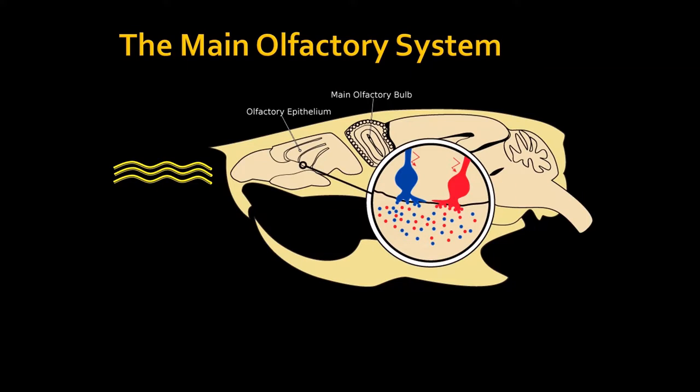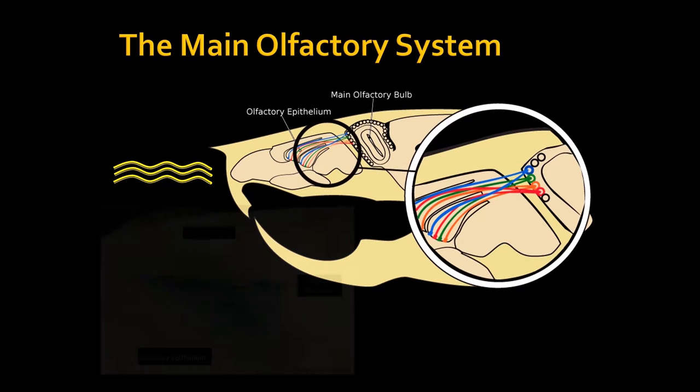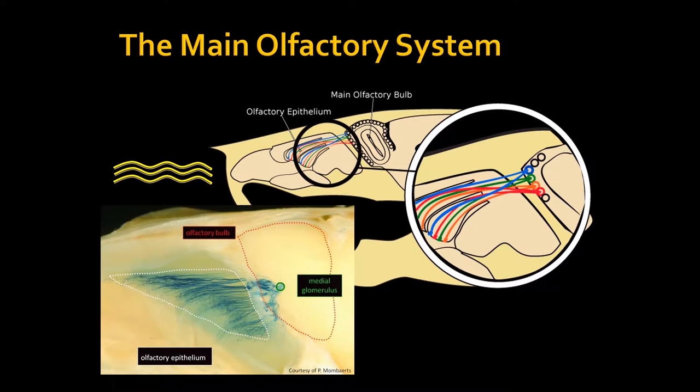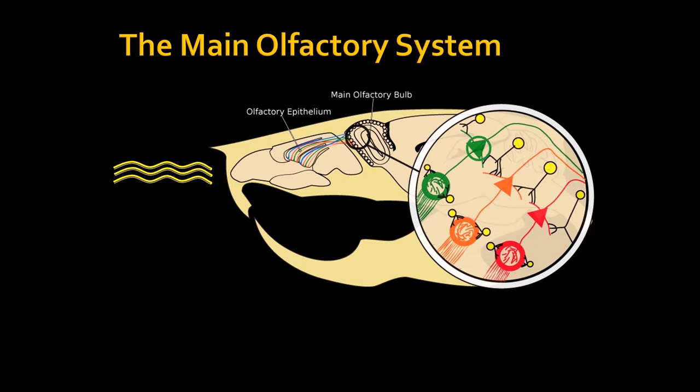We were interested in the neuroplasticity part, and the question was where in the main olfactory bulb these changes occur. The signal is transmitted through the bulb via receptor neurons in the nose, which send the signal through their axons into the main olfactory bulb and then on to so-called mitral cells.